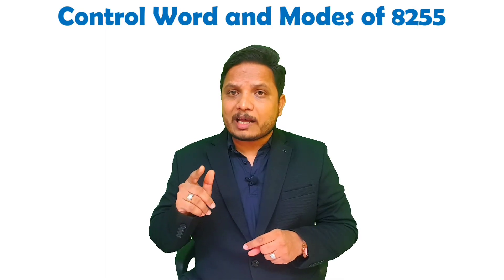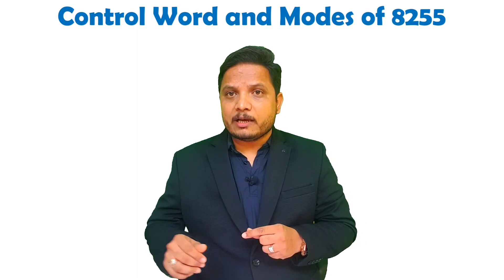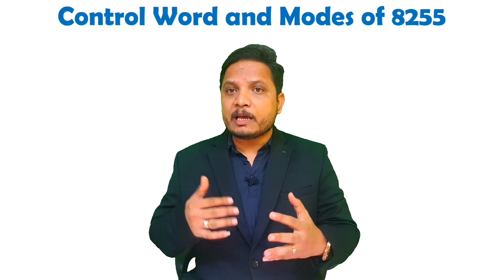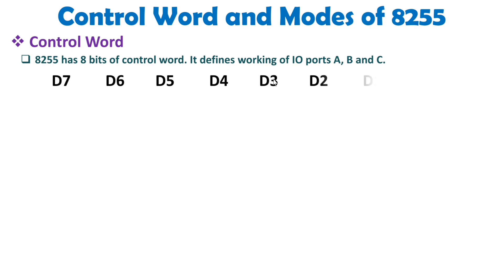First of all, I'll be explaining the control register of 8255, which will give you a clear picture of how operating modes are defined. When we talk about control word, you should know it has 8 bits, and this control word gets selected by A0 and A1 terminals of 8255. If A1 and A0 are both 1, then the control word gets selected and we can load it through D0 to D7 bits of 8255. It defines the working of IO Ports A, B and C.